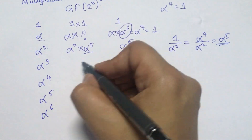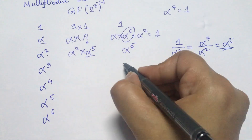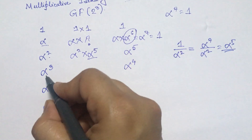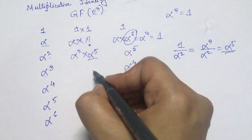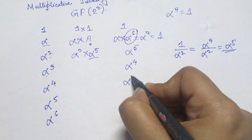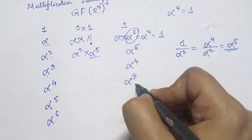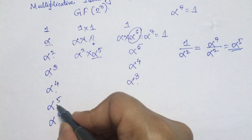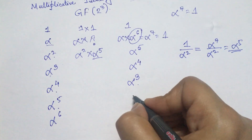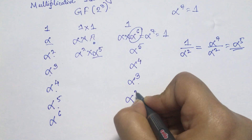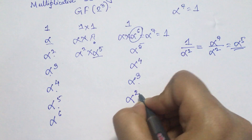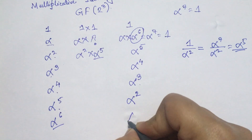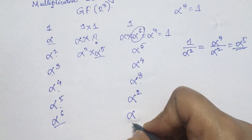By using similar reasoning, we can say that α⁴ is the multiplicative inverse of α³. The multiplicative inverse of α⁴ is α³, the multiplicative inverse of α⁵ is α², and the multiplicative inverse of α⁶ is α.